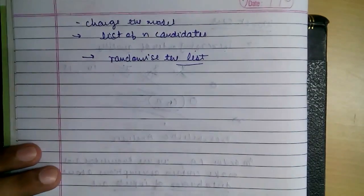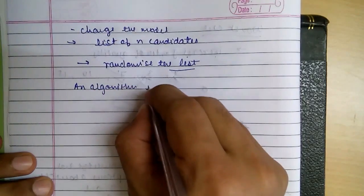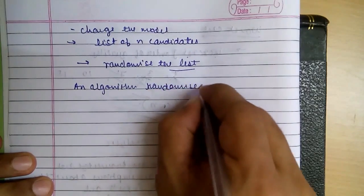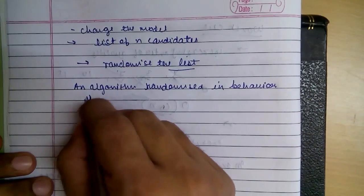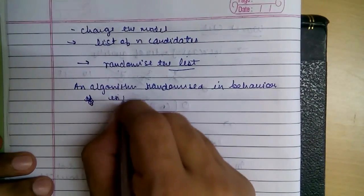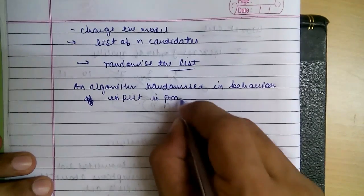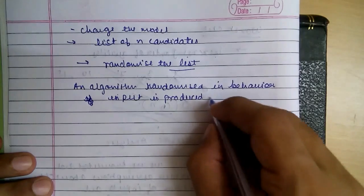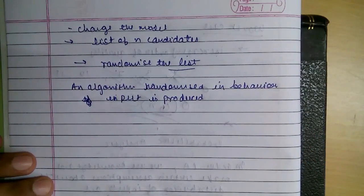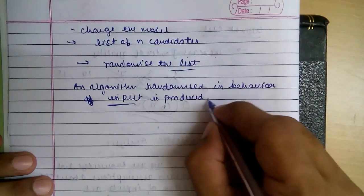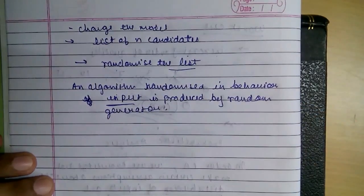So what is the randomized algorithm? An algorithm is randomized in behavior if it depends not only on the input but also what is produced by the random generator.